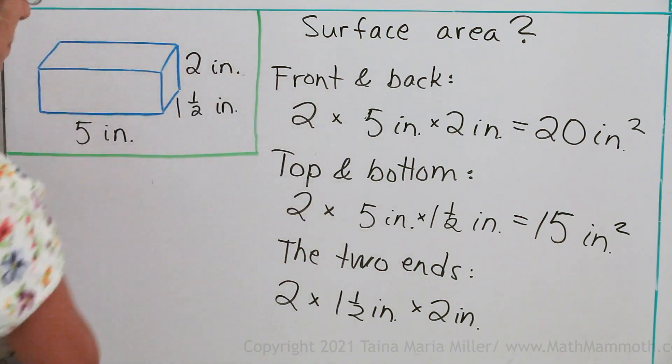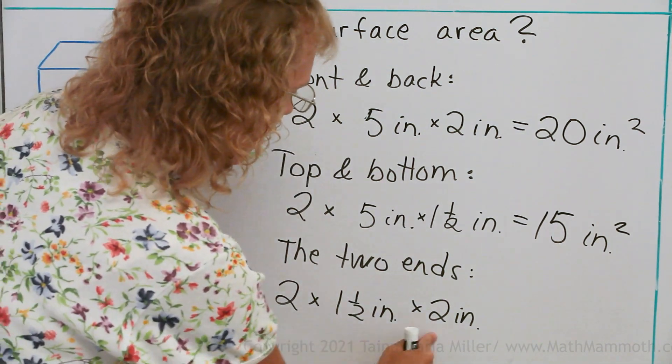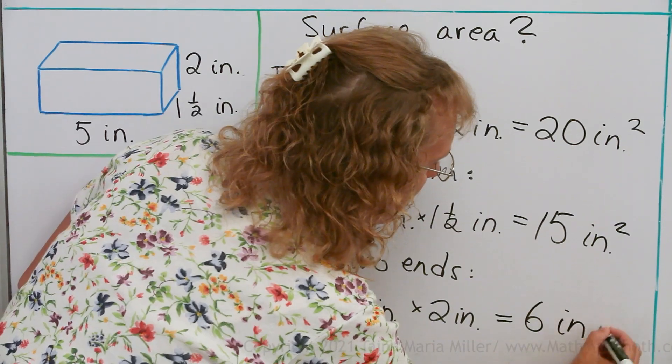So this is 3 times 2 equals 6 square inches.